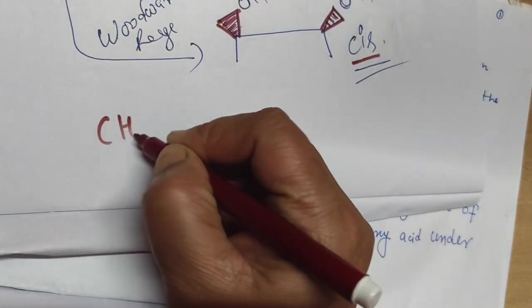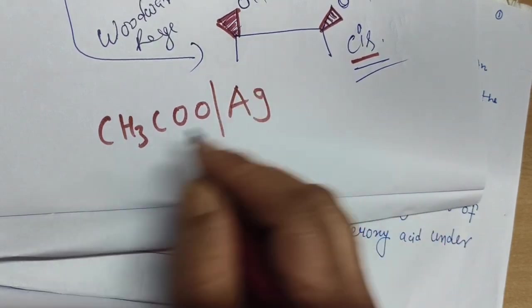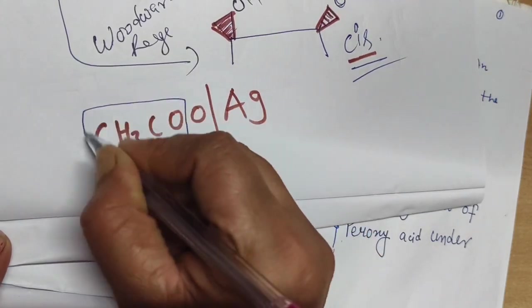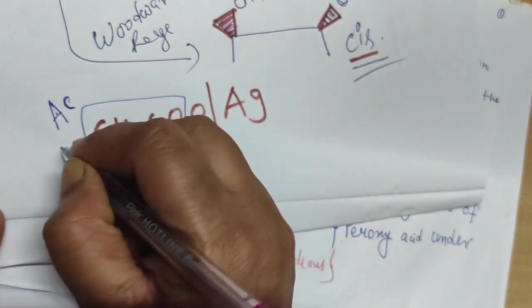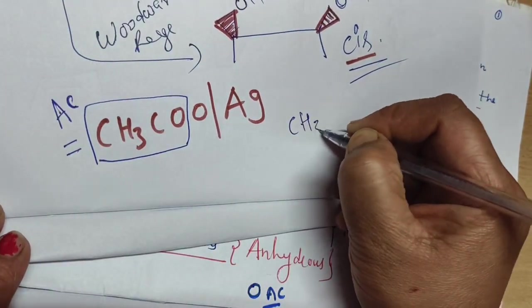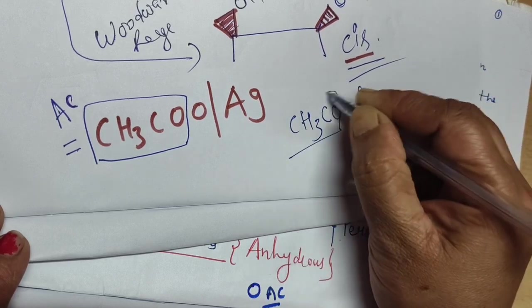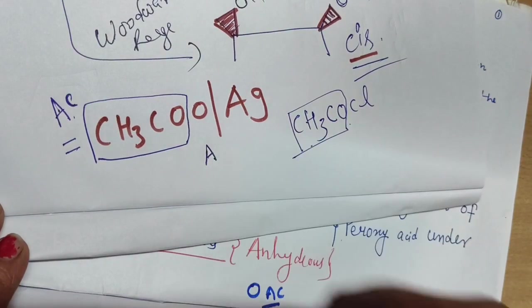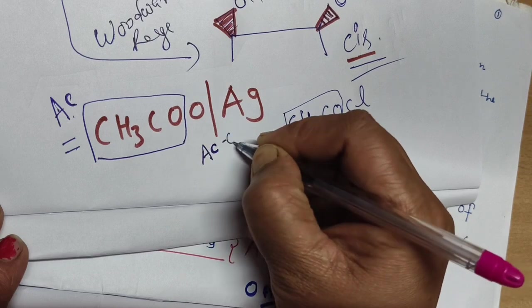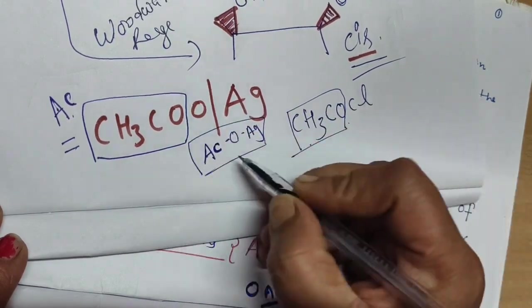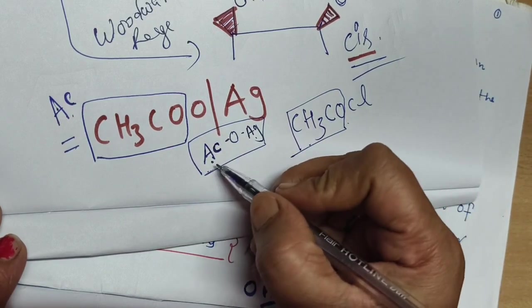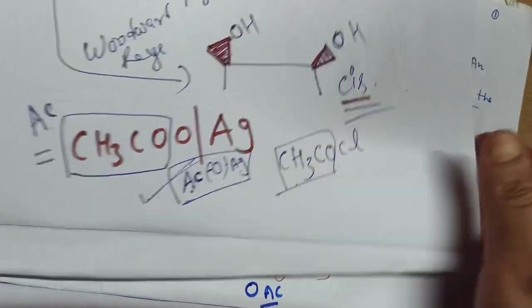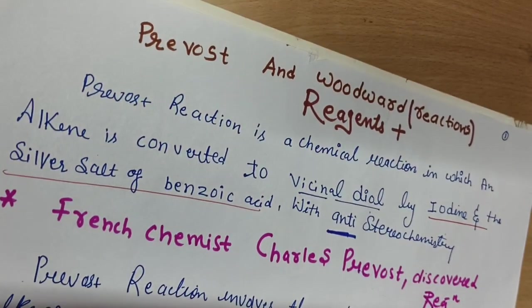When we represent silver acetate in reactions, we write CH₃COOAg. The acetyl group CH₃CO can also be written as Ac. So in reference books you will find it written as AcOAg, meaning silver acetate. Don't be confused by this notation — this is the way it is represented in textbooks.